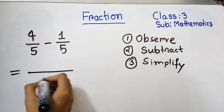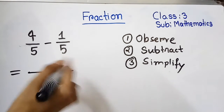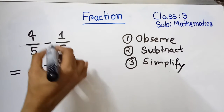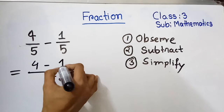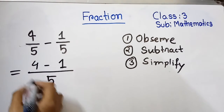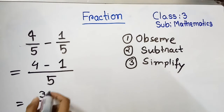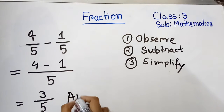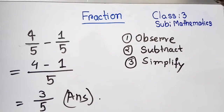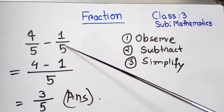We write the numerators with a minus sign: 4 minus 1. Four minus one is three, and the denominator is five, so the answer is 3/5. Again explaining: 4/5 minus 1/5 — the denominators are the same, so we write five as the denominator.